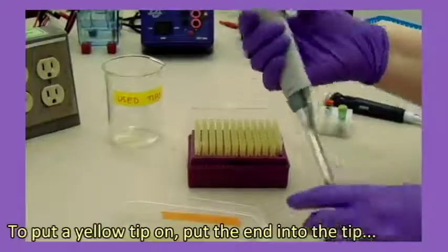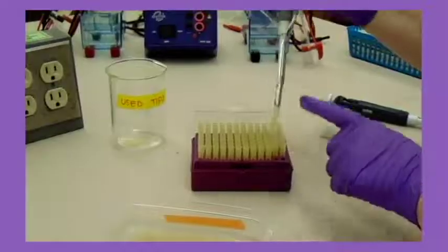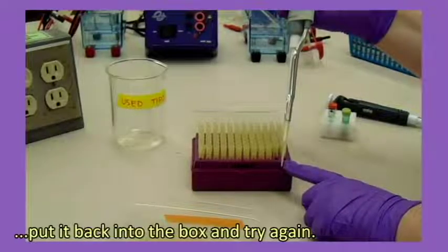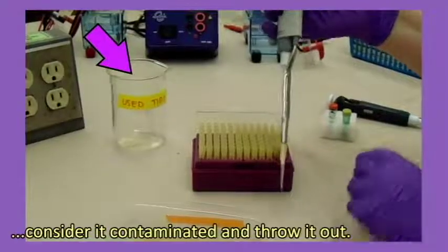To put a yellow tip on, put the end into the tip, press down and give it a little twist. If the tip falls off onto the table, you can put it back into the box and try again. If it falls onto the floor, consider it contaminated and throw it out.